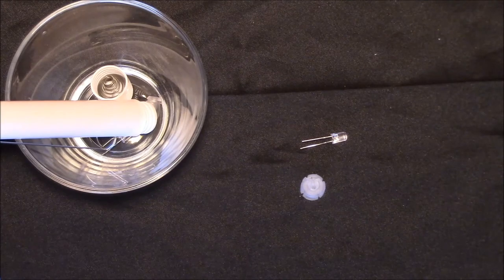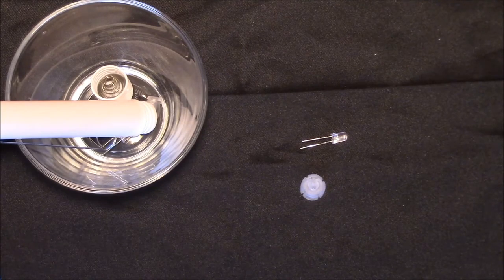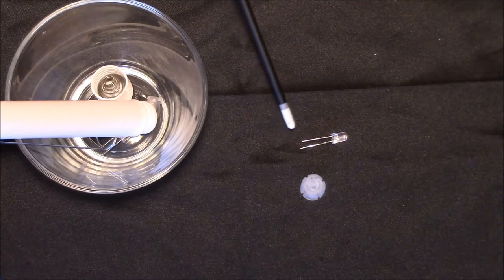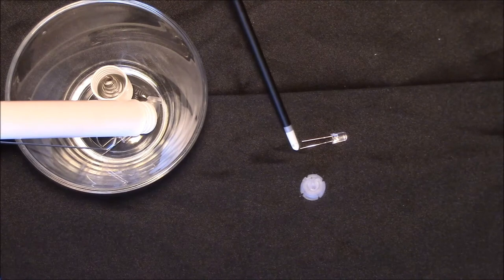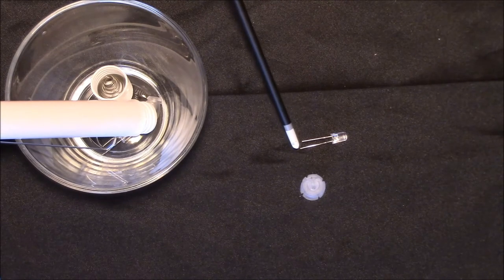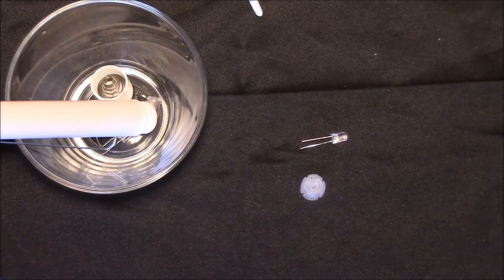You'll notice there's a hole in the center and two holes on the side. One parallel to the center hole, one offset. The center hole and the side hole that's parallel is where your positive and negative end of your LED goes into.